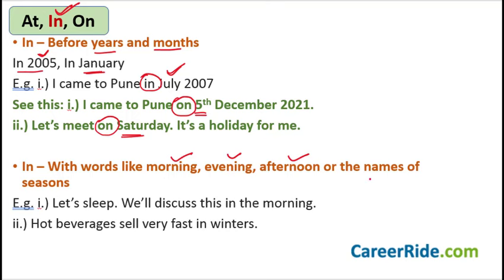Before the names of the seasons also we use 'in.' For example: 'We'll discuss this in the morning' — I didn't say 'at the morning,' I said 'in the morning.' 'Hot beverages sell fast in winters.' Winter is a season that we are talking about. So before the names of the seasons also we write the preposition 'in.'